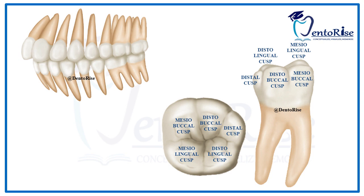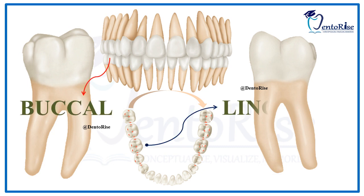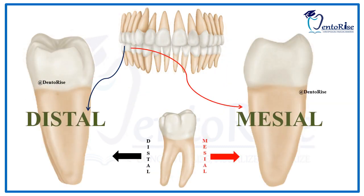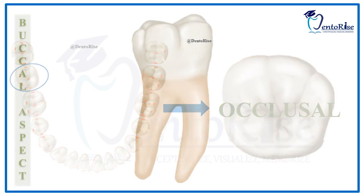There are two roots in this tooth: the mesial root and the distal root. The entire dental anatomy of permanent mandibular first molar will be discussed under the headings: the buccal aspect, the lingual aspect, the mesial aspect, the distal aspect and the occlusal aspect. In this video we will be particularly talking about the buccal aspect.